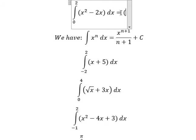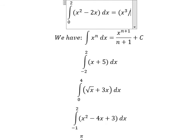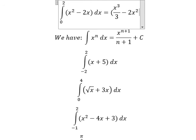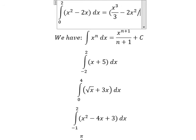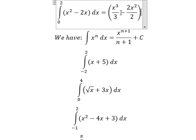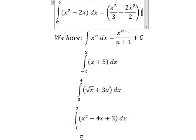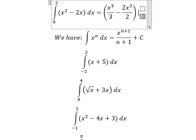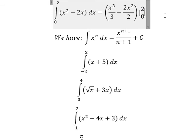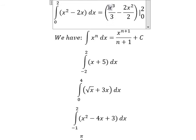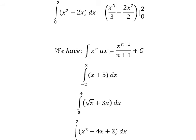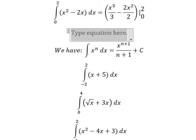So we got s to the power of three over three, plus s to the power of two over two. I will put the bounds from zero to two. I will put number two here and number zero here, so we have the final answer.